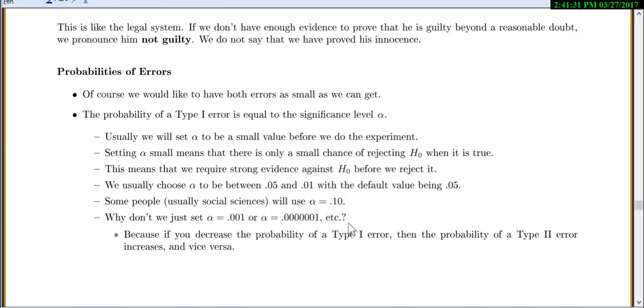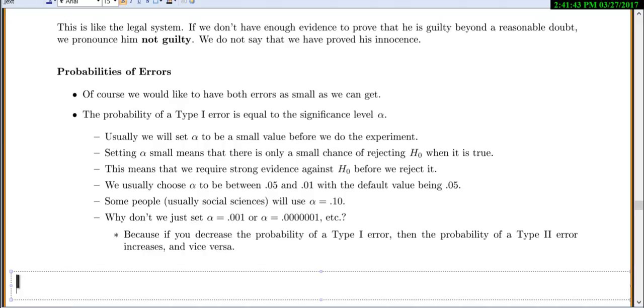You might ask, why don't we just say alpha equals 0.001 or 0.0001? It's because if you decrease the probability of a type 1 error, then the probability of a type 2 error increases and vice versa. We can't just make it really small because then we're more likely to make a type 2 error.